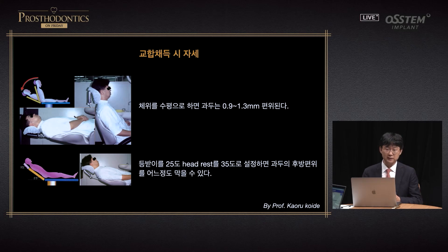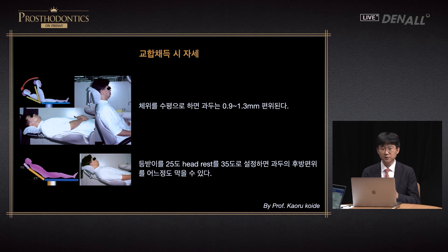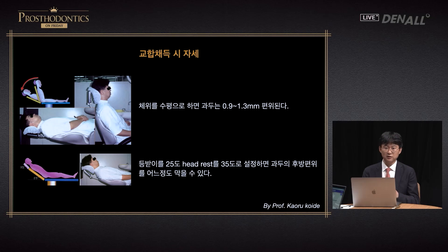Professor Kaworu Koite in Japan conducts many studies on postures for occlusal position taking. In supine position, the condyle is pushed by gravity and the ligament is extended, resulting in about 1 mm displacement. We take occlusal position in sitting, and a posture similar to the sitting position at the bottom is the most stable. This posture is known to prevent posterior displacement of the condyle to a certain degree.